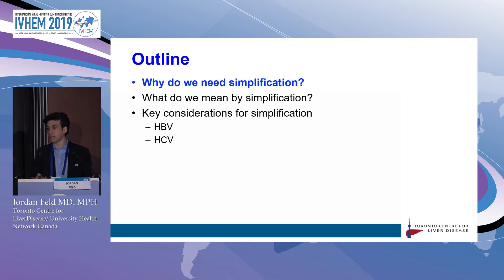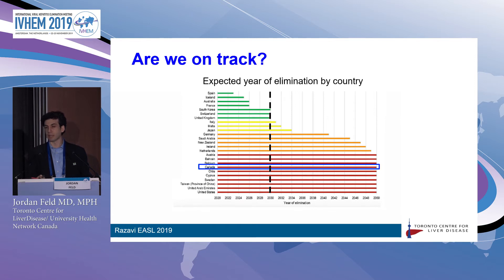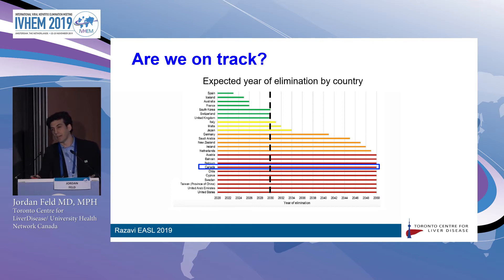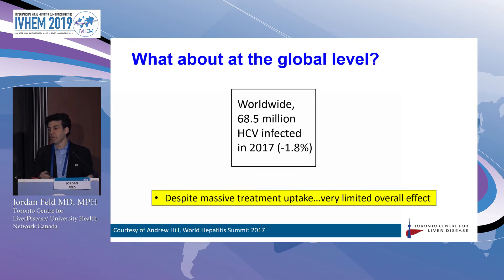Why do we need simplification? It's important that we keep our eye on the prize: we're really trying to get to these elimination targets. Most people are familiar with these, but as I'll show you, we're really not on track. Data from earlier this year show that most countries — and I've highlighted where Canada sits — are not on track to hit these elimination targets by 2030.